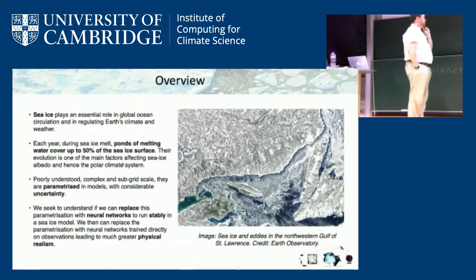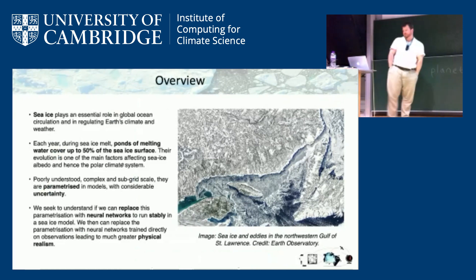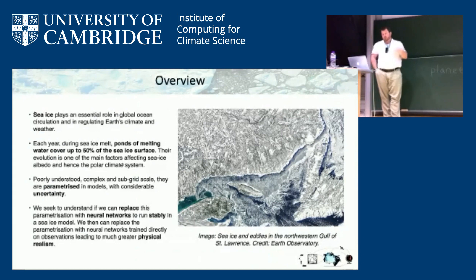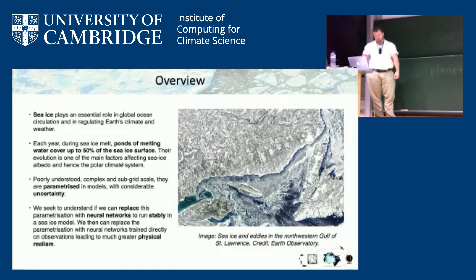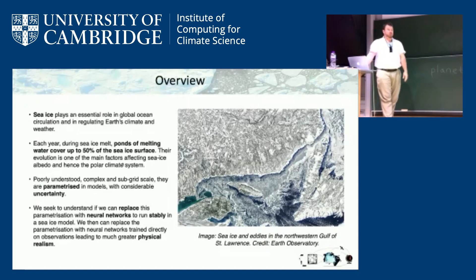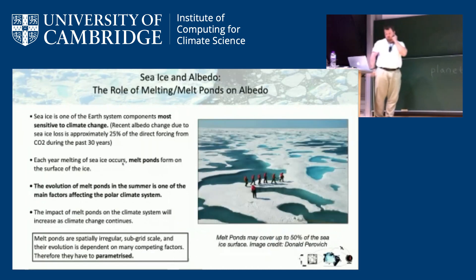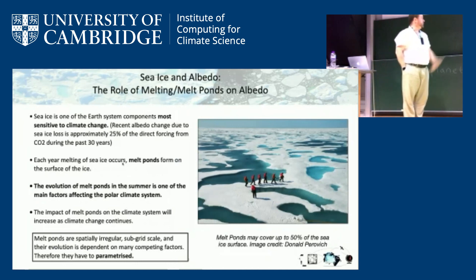Why do we care about sea ice? It plays an essential role in ocean circulation and regulating Earth's climate and weather. One of the main phenomena with sea ice is melt ponds. Each year, melt ponds cover up to 50% of the sea ice surface, so they play an enormous role. They're already understood to need parameterization, and we're seeking whether we can replace that parameterization with neural networks, hopefully leading to better physical realism.